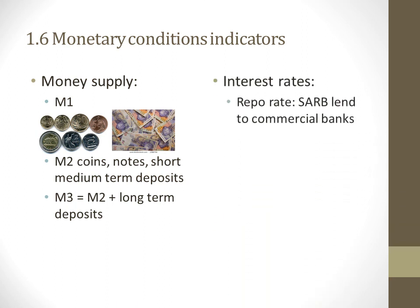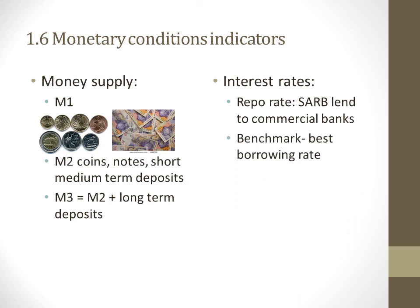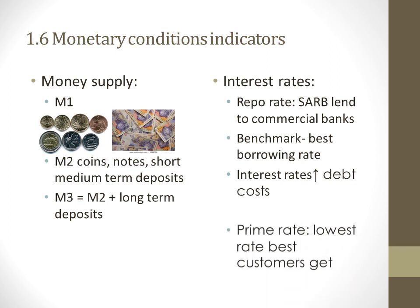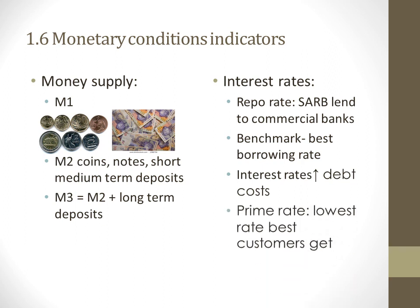Interest rates: the repo rate, or repurchase rate, is the rate the Reserve Bank lends to commercial banks. This benchmark rate equals the best borrowed rates, and when interest rates increase, debt costs rise. The prime rate is the lowest rate — the best rate a bank gives to a customer.